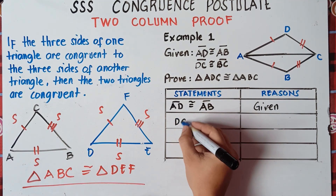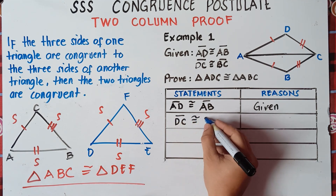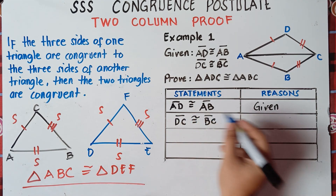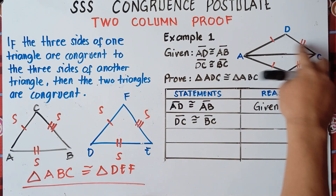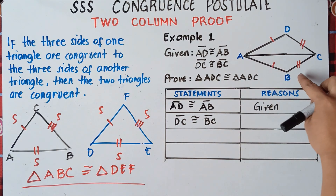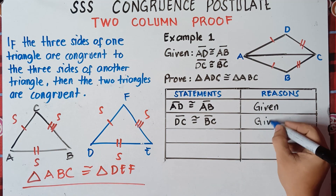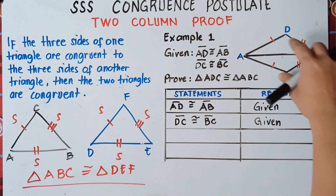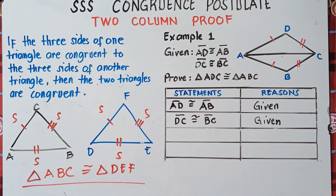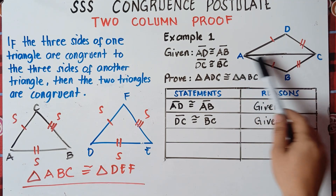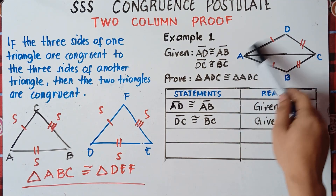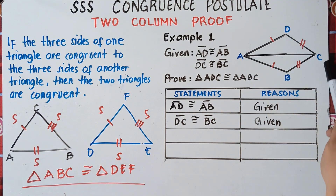We have another given: DC is congruent to BC. We already labeled this on our illustration. So we already have two sides. What else can you see? We need to prove that triangle ADC is congruent to triangle ABC.